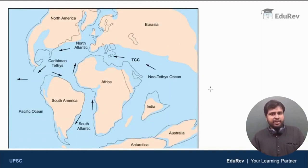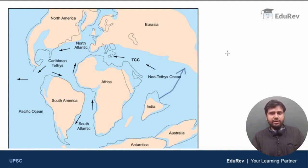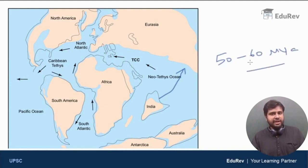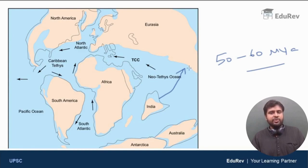The Indian plate started drifting in the direction of the Eurasian plate and collided with it. Somewhere between 50 to 60 million years ago — a rough date range estimation — the Indian plate drifted and collided with the Eurasian plate due to the movement of tectonic plates.